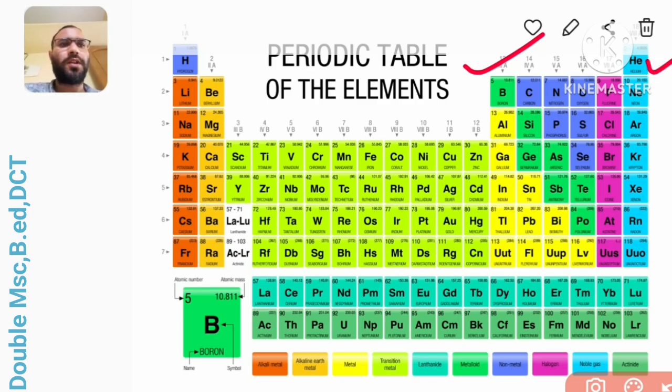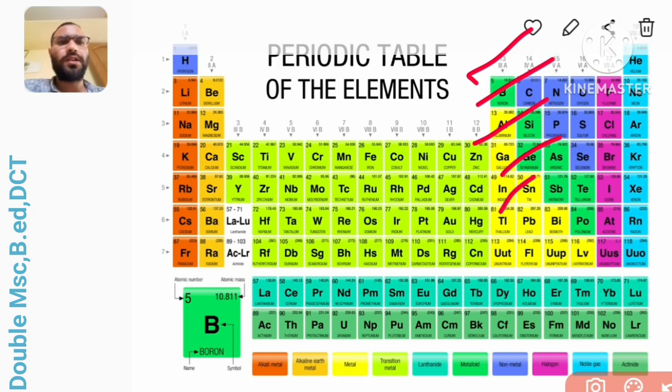Coming to group 13, how to remember group 13? We have to remember a line that is: bangan alu gajar in thaila. Boron, aluminum, gallium, indium and thallium.